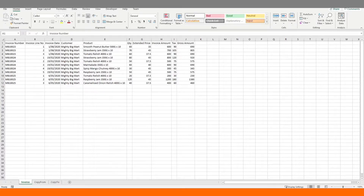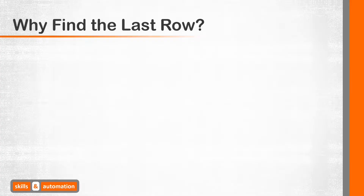On a side quest, we will look at the UsedRange property of the worksheet object, which makes up for cases where the current region may be inadequate. Just a quick note: this slide will repeat in each of my videos on finding the last row, since we'll follow the same format and cover the same examples using different techniques. Please skip to the next timestamp if you prefer.